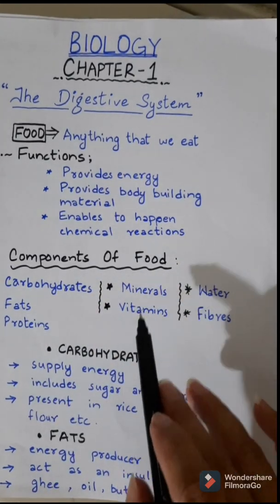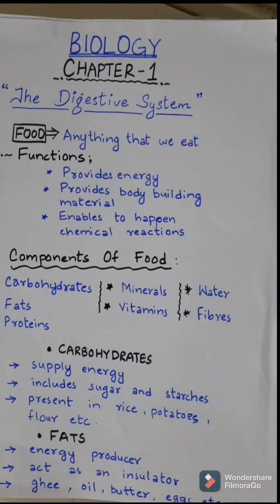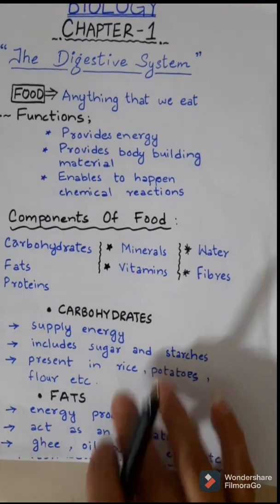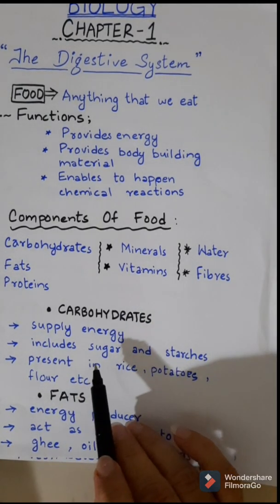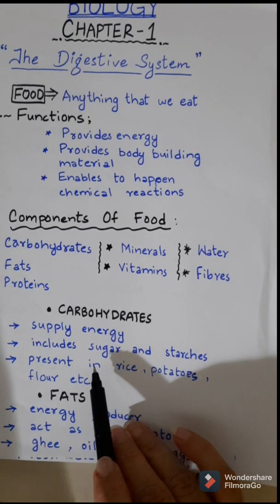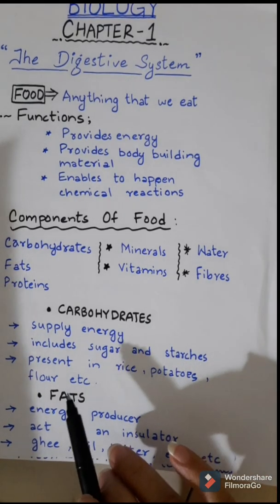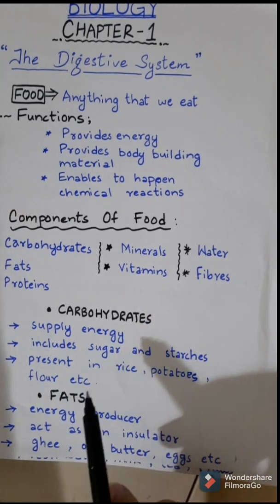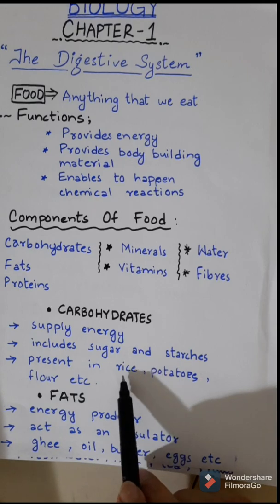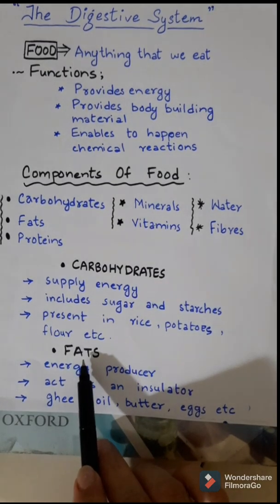The components of food are: carbohydrates, fats, proteins, minerals, vitamins, water, and fibers. First, carbohydrates — they supply energy. They include sugars, of which there are a number of types, and starches. Carbohydrates release energy when they are used up in the cells. They are present in rice, potatoes, flour, etc.